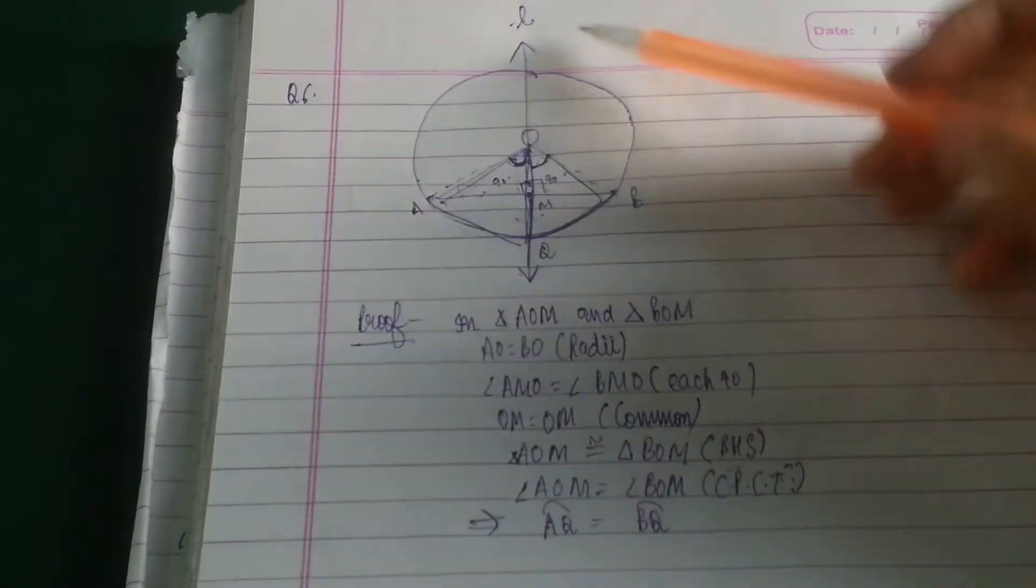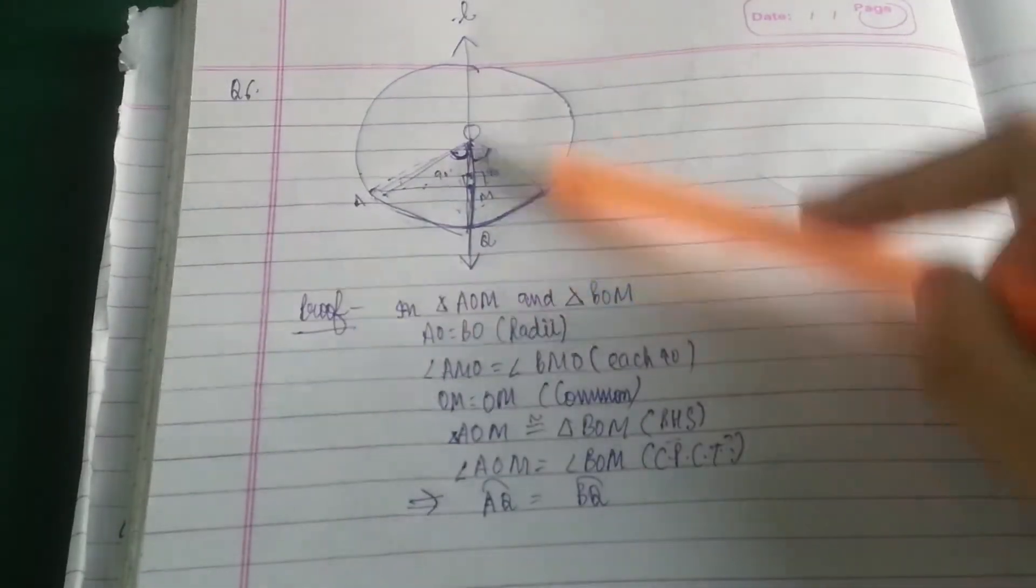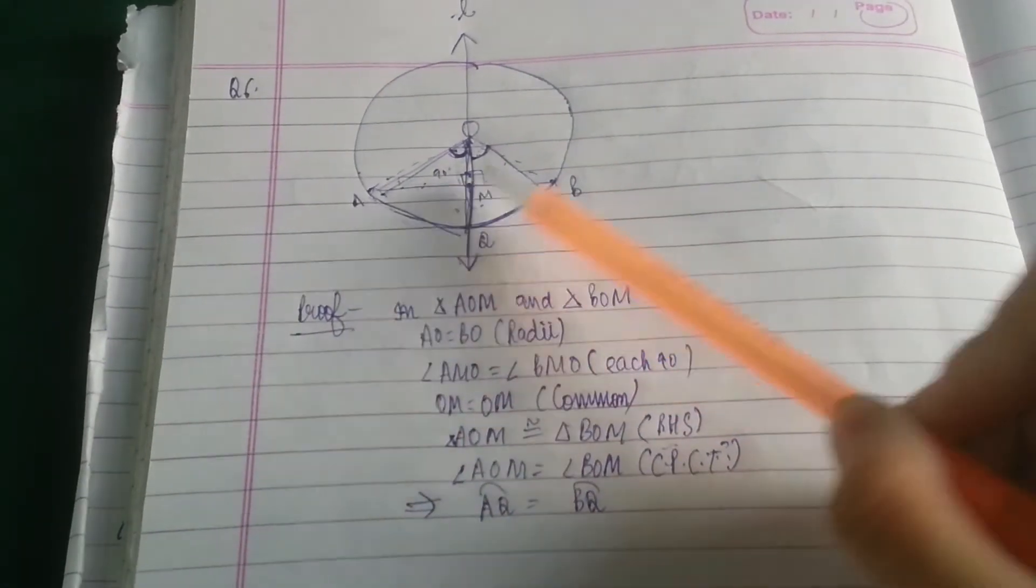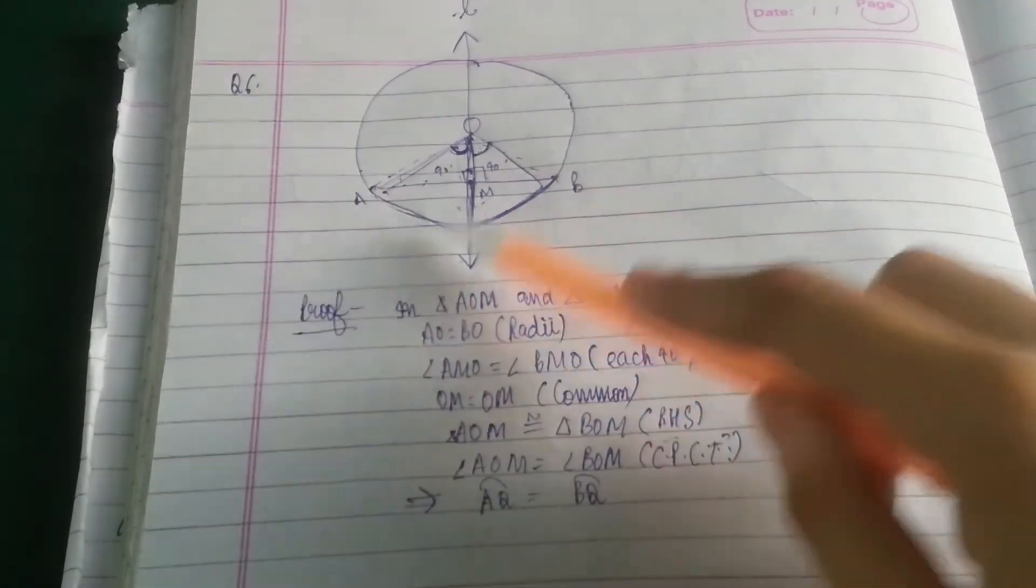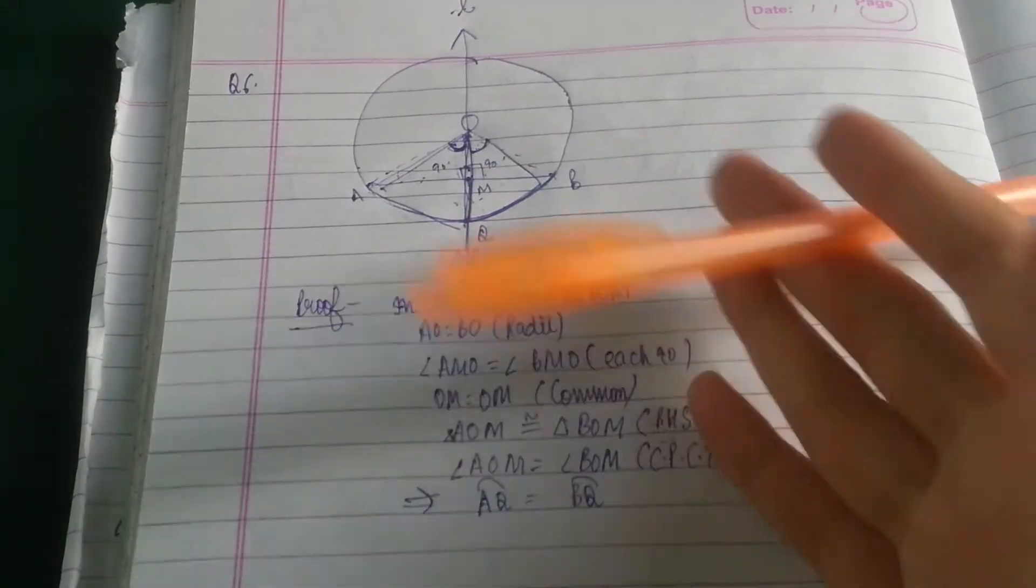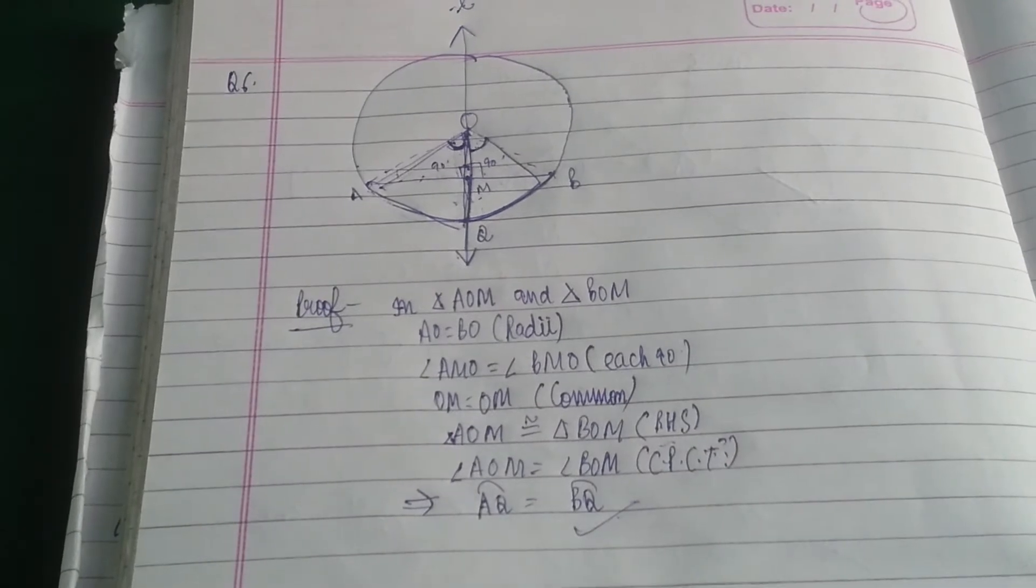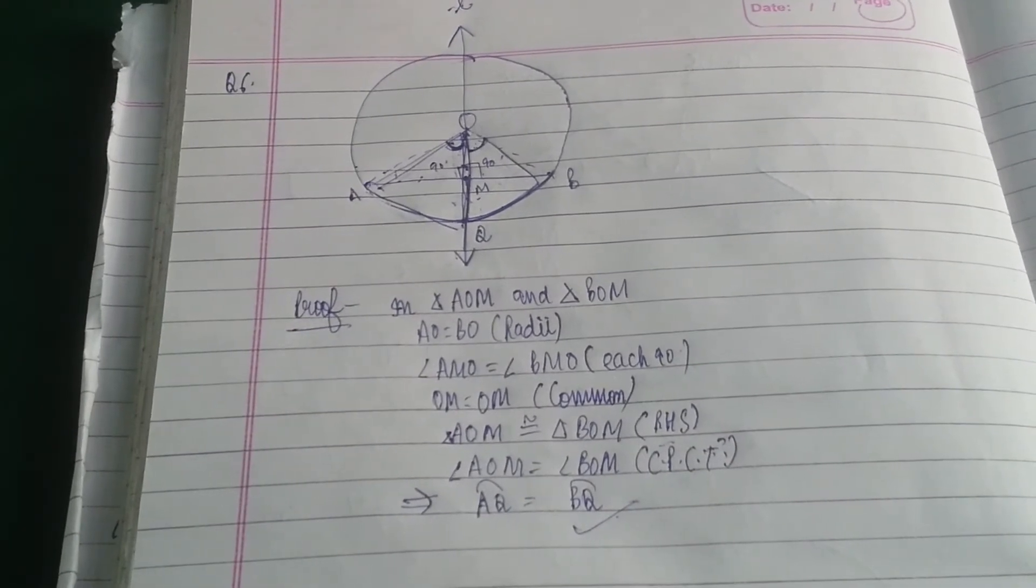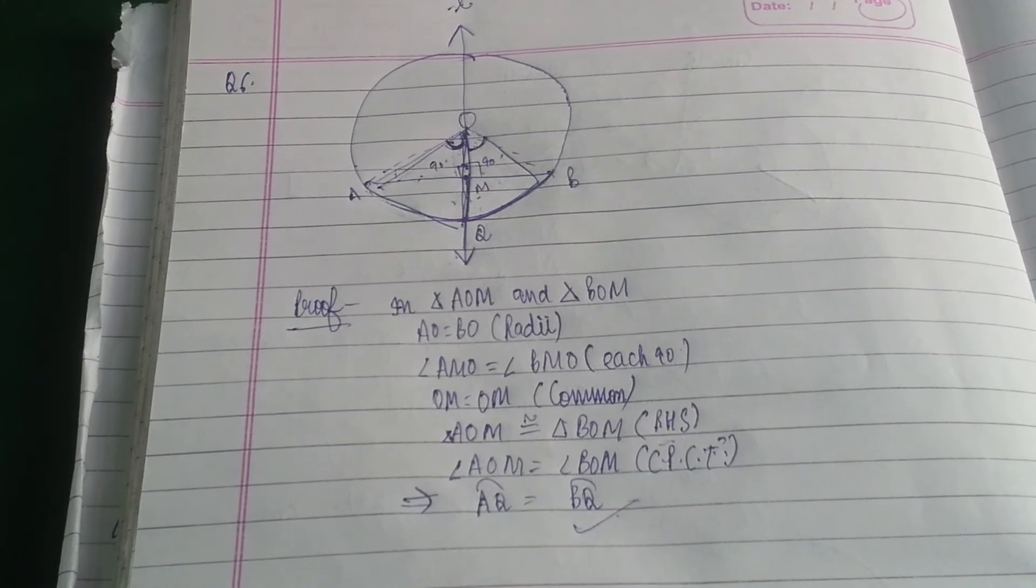So what we basically did, we suppose that L is the right bisector of this chord. And if it's a bisector of the chord, then this angle and this angle both will be equal to 90 degrees. Then in order to prove these as equal, we took these two triangles and proved them congruent by these following reasons. And hence, this is the required proof of this question. It's very simple but just basic understanding you need to take. So thank you for watching this video.